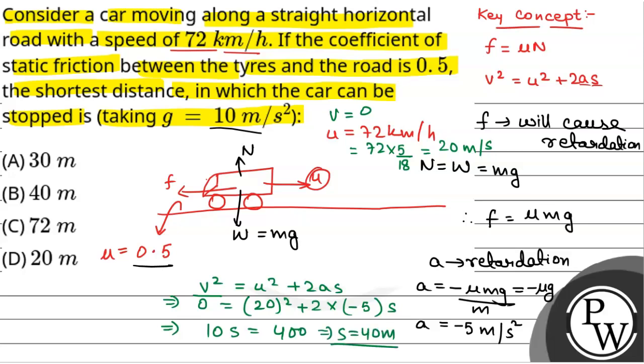So the required distance is 40 metres, which is option B — that is the correct option. Hope you understood it well. Best of luck!